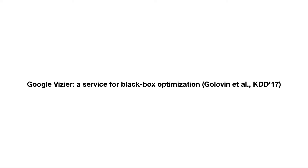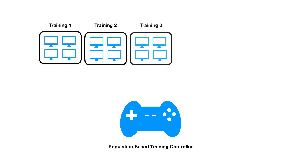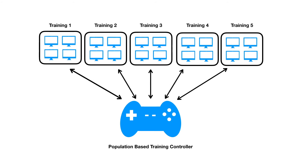Together with the Google Vizier team, we developed a new system that runs population-based training as a standalone black box service. We generalized the population-based training algorithm into a genetic programming framework, which is implemented as part of the PBT service. All of the training jobs in different production teams talk to the same PBT service, and the service sends selection and mutation decisions to each job separately.